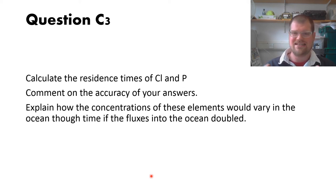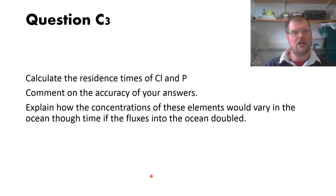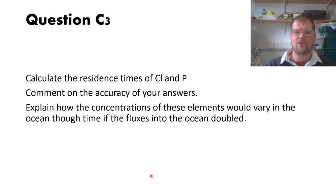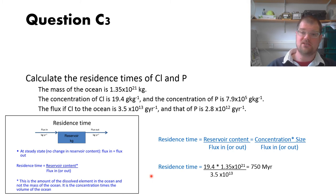Quite a lot of people got the right equation: the residence time is defined as the content of the reservoir — how much stuff is in it — divided by the flux in or out. One thing people got wrong was missing the reservoir content calculation. You need to multiply the concentration by the mass of the ocean — times that concentration by the relevant mass value depending on which element you're calculating.